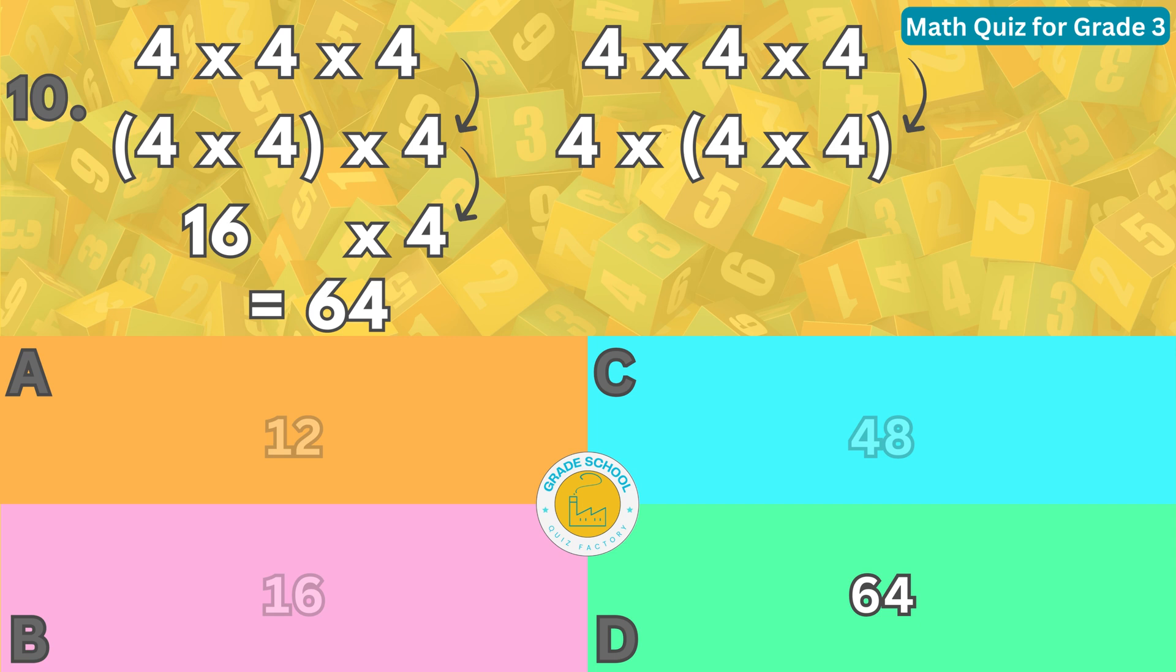Alternatively, we can group the last two factors and multiply them first, then multiply the result by the first factor. We get four times four times four equals four times 16 equals 64. Either way, we get the same answer of 64.